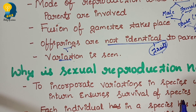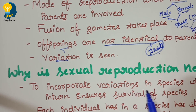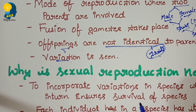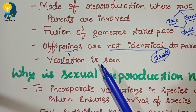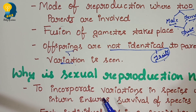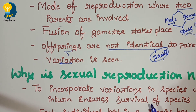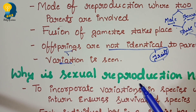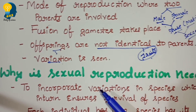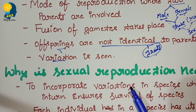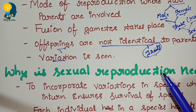The first point to understand is: sexual reproduction is needed to incorporate the variations in species, which in turn ensures the survival of species. Variation is only seen in sexual mode of reproduction, but under asexual mode of reproduction, variation cannot be seen. Organisms that reproduce asexually are completely identical to their parents. Variations can only be seen under sexual mode of reproduction.